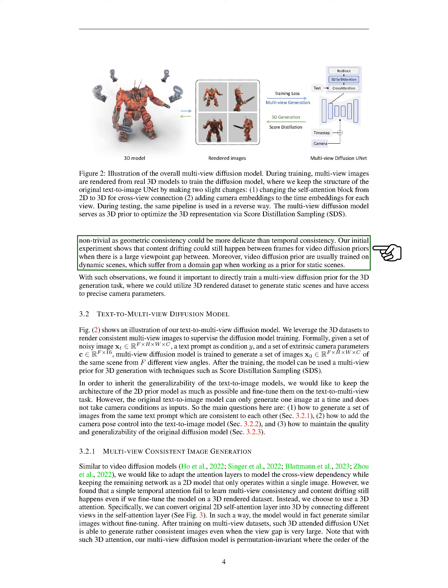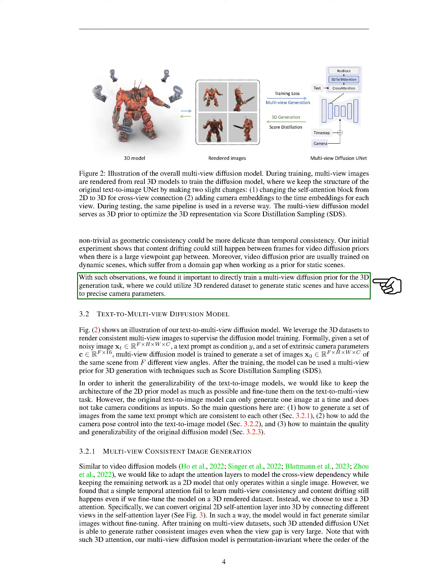Our initial experiments show that content drifting could still occur between frames for video diffusion priors when there's a large viewpoint gap. Moreover, video diffusion priors are usually trained on dynamic scenes, which can create a domain gap when used as a prior for static scenes. Based on these observations, we believe it's crucial to train a multi-view diffusion prior directly for the 3D generation task. This way, we can use a 3D render dataset to generate static scenes and have access to precise camera parameters.